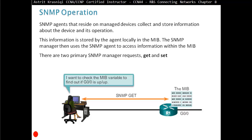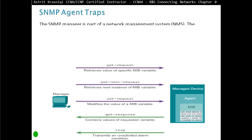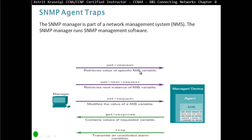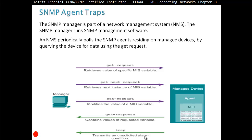There are two primary SNMP manager requests: GET and SET. The SNMP manager is part of the network management system and runs SNMP management software. Messages from the manager to the agent include: GET request, which retrieves the value of a specific MIB variable; GET next request; and SET request, which modifies the values of a MIB variable. In response, the agent sends a GET response. Trap messages transmit unsolicited alarm conditions. The NMS periodically polls the SNMP agent on the managed device by querying it using GET requests.